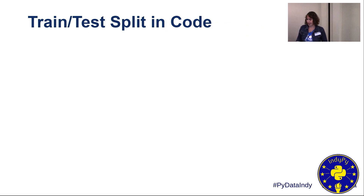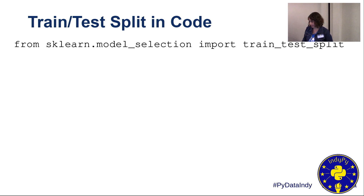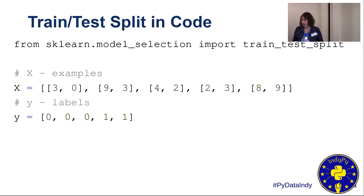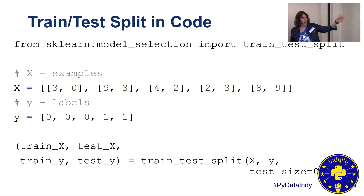What does it actually look like if you're going to code it? First, you want to import train_test_split from scikit-learn — an awesome Python library for machine learning that does most of the hard things for you. X are your examples — we have five values, each a pair of numbers, maybe a set of coordinates. Y are your labels — two different categories, either zero or one. You pass train_test_split your examples, your labels, and how large you want your test size to be — for example, 25% — and it gives you your training data (train_X, train_Y) and your test data (test_X, test_Y).